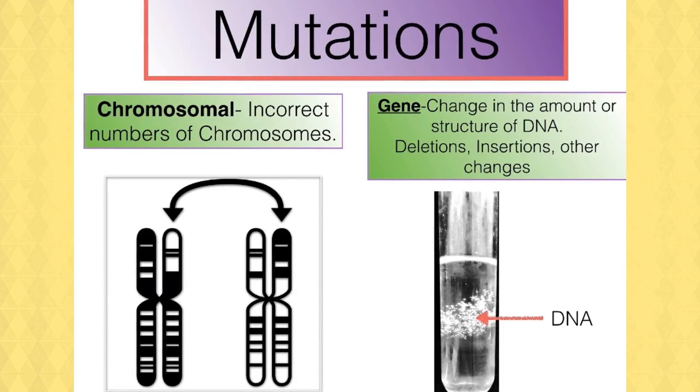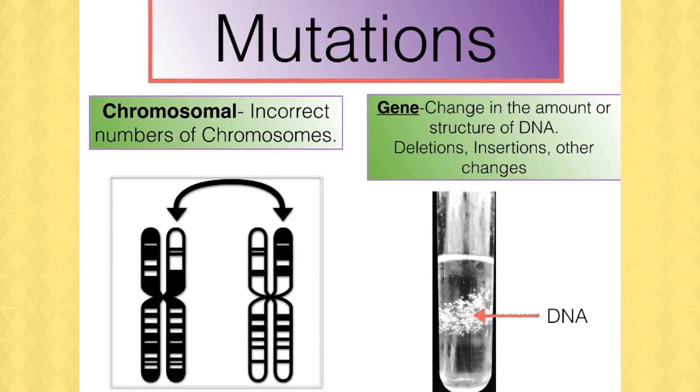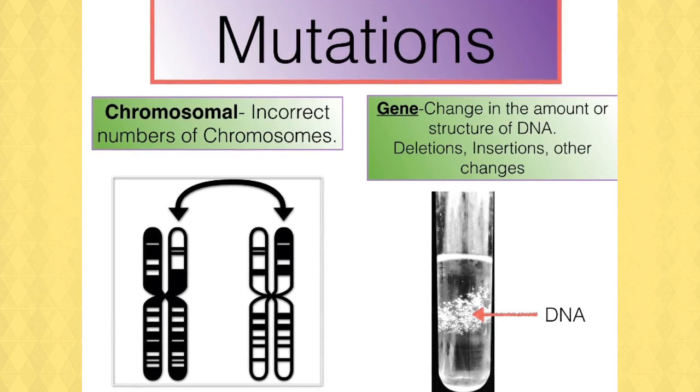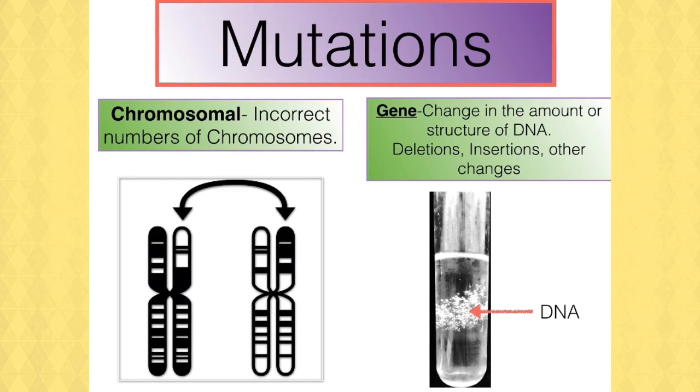There are chromosomal and then there are gene mutations. Chromosomal mutations include changes to their structure and also incorrect numbers of chromosomes. A gene mutation is changes in the structure or the amount of DNA. It could mean deleting some types of bases, inserting others or changing some about.